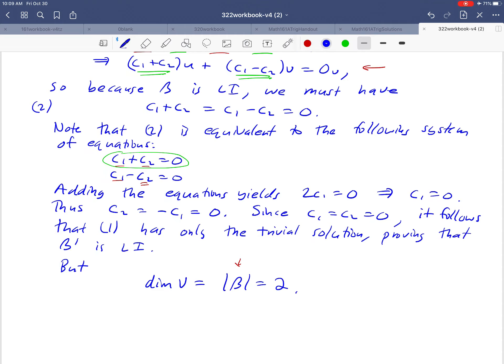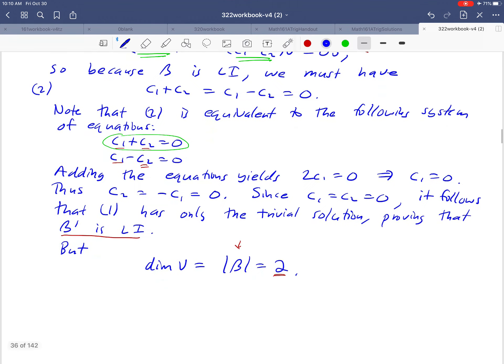Here's what we have: a linearly independent set β' that has two vectors in it, {u+v, u-v}, and we know that the dimension of our vector space is two. We have a theorem that tells us that's enough information to tell us that β' is also a generating set.